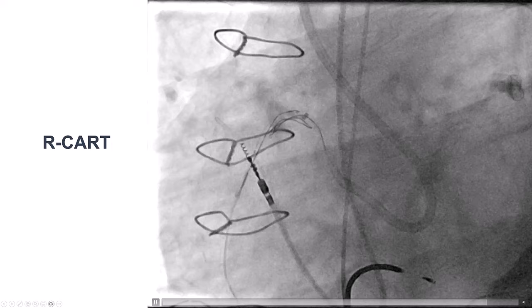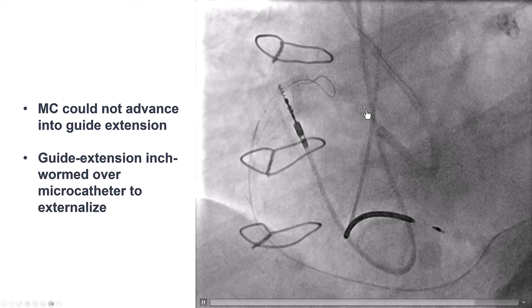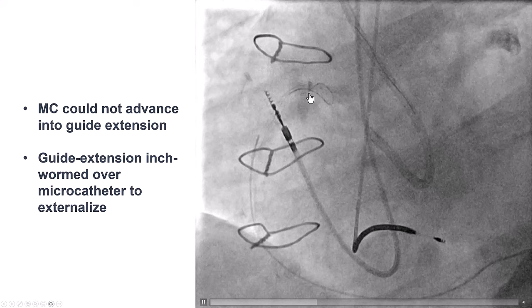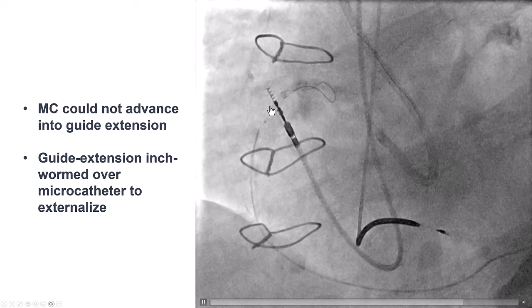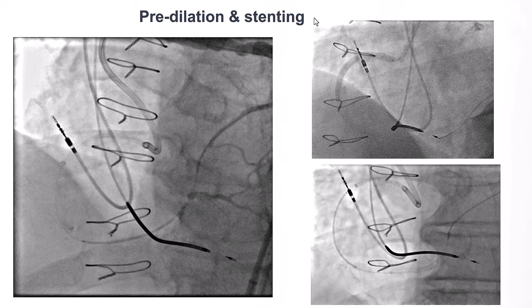After we got the wire in, we could not advance the microcatheter all the way into the guide extension because of the calcium. So we did the opposite — we interwarmed the antegrade guide extension over the retrograde microcatheter, advancing it all the way to the retrograde microcatheter. We were then able to externalize an R350 guidewire, giving us much more support.